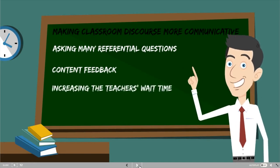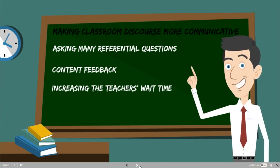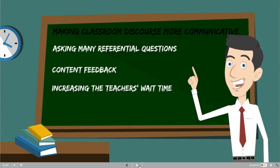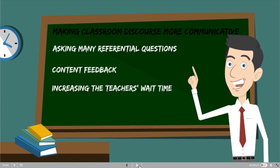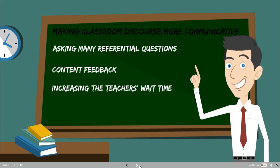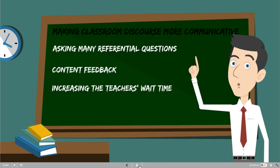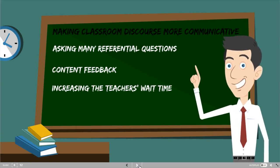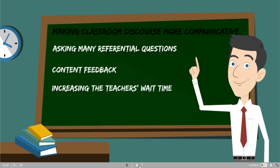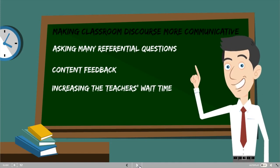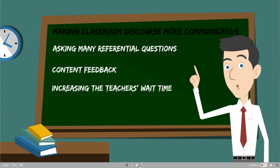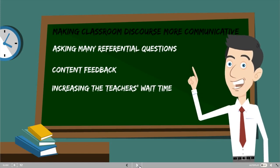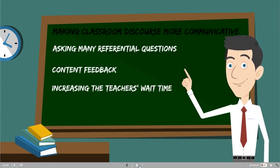Making classroom discourse more communicative: teachers can do this by asking more referential questions instead of display questions. For content feedback, teachers should focus on the content rather than the structure or form. Even if students make grammatical mistakes, teachers should not correct them all the time, because overcorrecting students may cause them to become unconfident and unable to talk in the classroom.